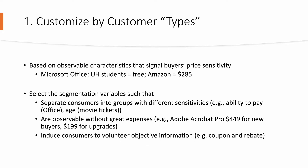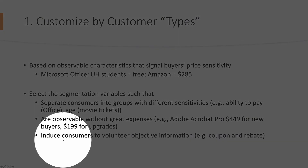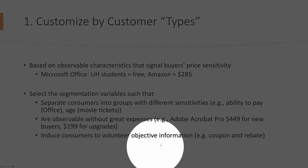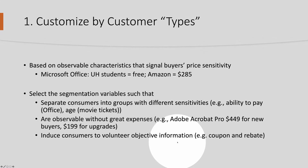For example, Adobe Acrobat Pro has a different price for new buyers versus existing customers. Finally, we may induce customers to volunteer their information — an example would be using coupons or rebates. Customers who are more price sensitive would seek out coupons and rebates, while customers who are less price sensitive — probably more time sensitive — are not going to use those things.